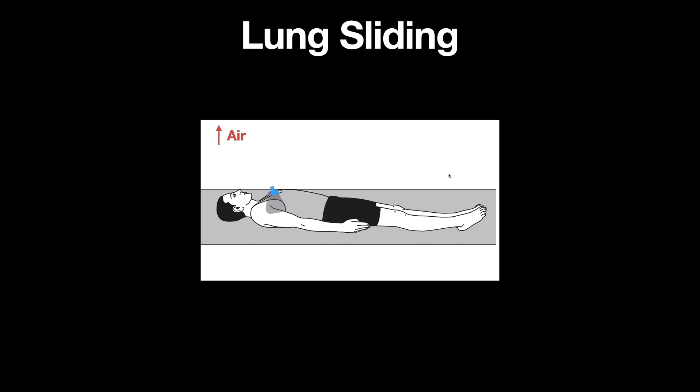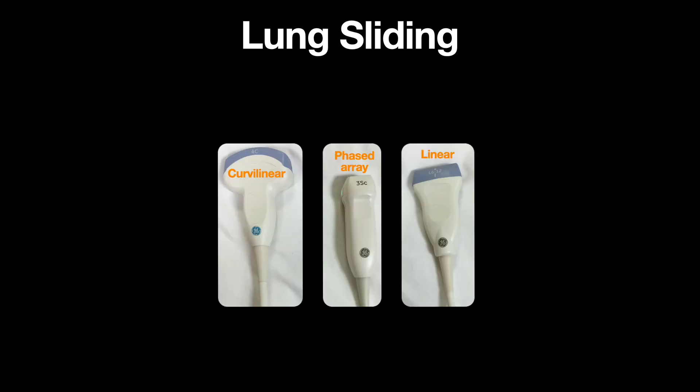It's important to note that lung sliding can also be seen with a phased array and curvilinear probe. However, it's usually easiest to visualize with a linear probe given its superficial nature.